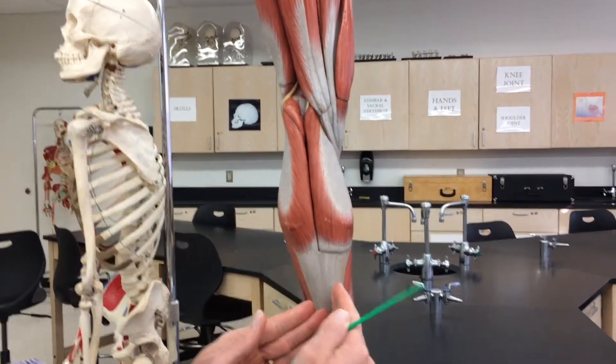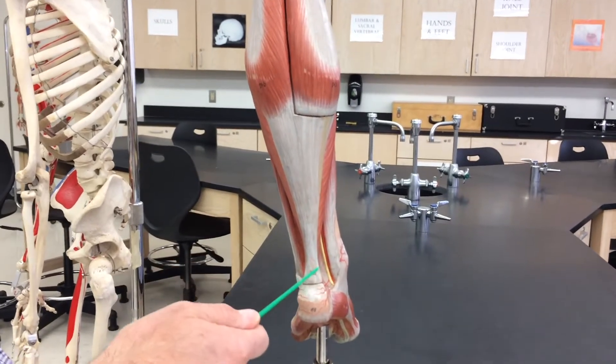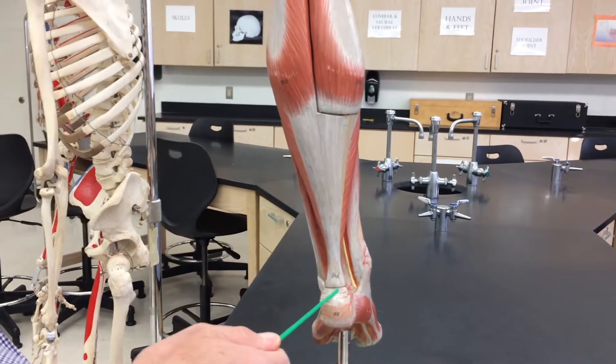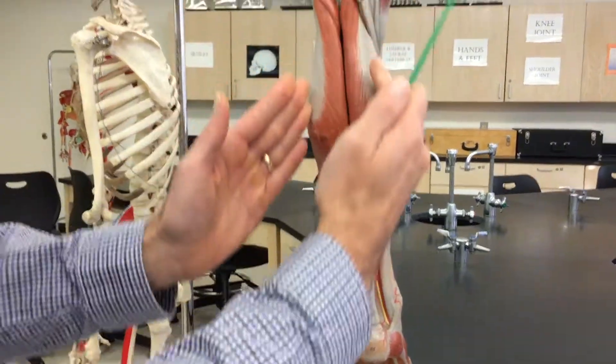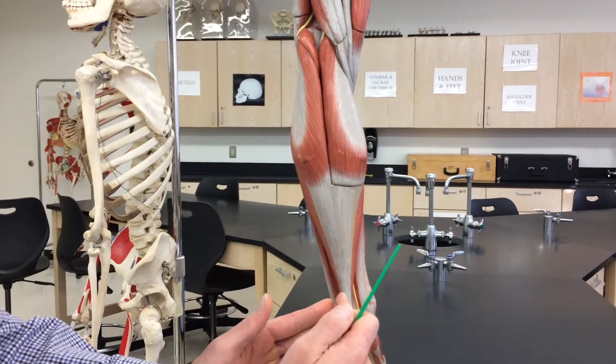...comes all the way through by way of the Achilles tendon, or the calcaneal tendon, all the way down to the calcaneus. So this is your heel. Muscle's going to come like this. Tendon pulls all the way down like this.